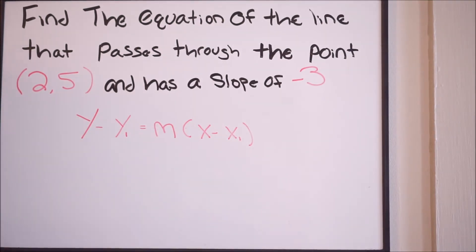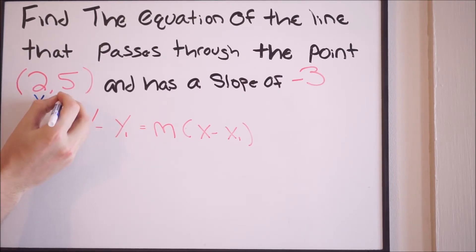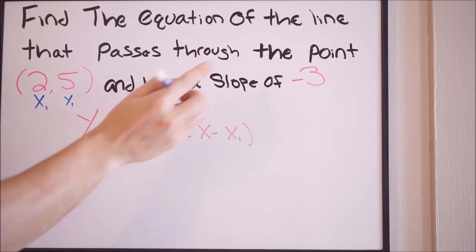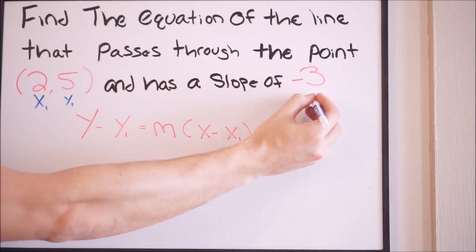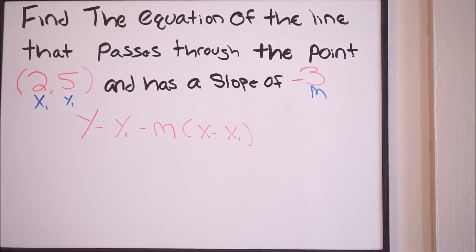So option 1, we're going to use point-slope form and all we have to do is fill in these values. Our y1 and our x1, that's just going to be our point right here. So we can label that as such: here is our x1, here is our y1, and our slope right here, which is negative 3.